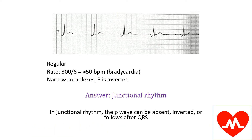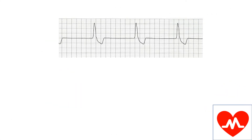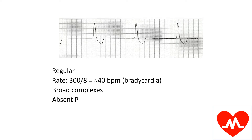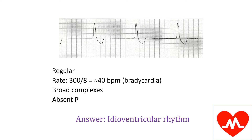Junctional rhythm arises from the AV node and the impulse can travel to the ventricles and also the atria. So this is also a regular rhythm, which is very bradycardic. The rate is about 40 beats per minute. However, there are broad complexes and the P wave is absent. So this is an idioventricular rhythm. This rhythm originated from the ventricular tissue, which becomes the pacemaker.